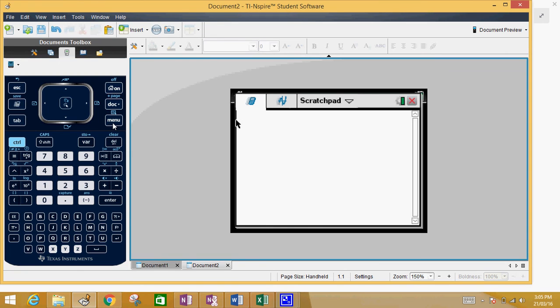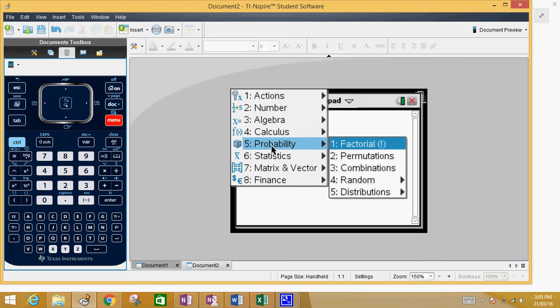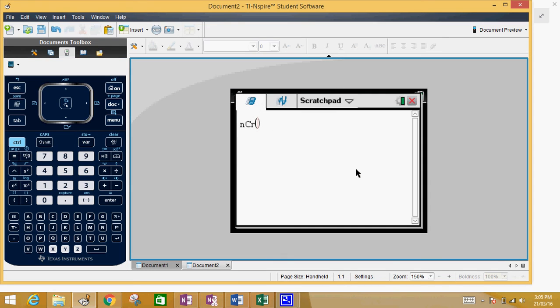And we're going to go to menu, and this is a probability, probability moment, when we are doing combinations.